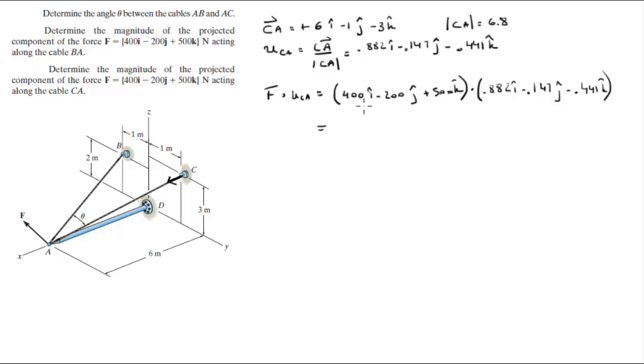So 400 times 0.882 is around 352.8. Now negative 200 times negative 0.147 is positive 29.4 and 500 times negative 0.441 is around negative 220.5. So this comes out to be 162.2 for this part.